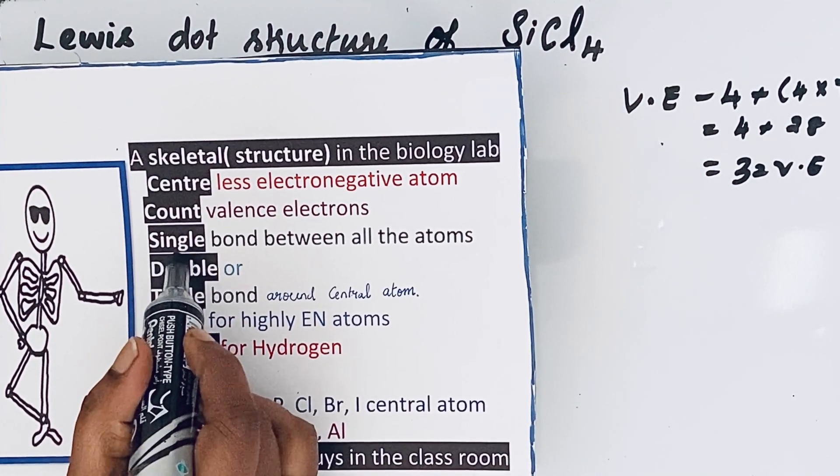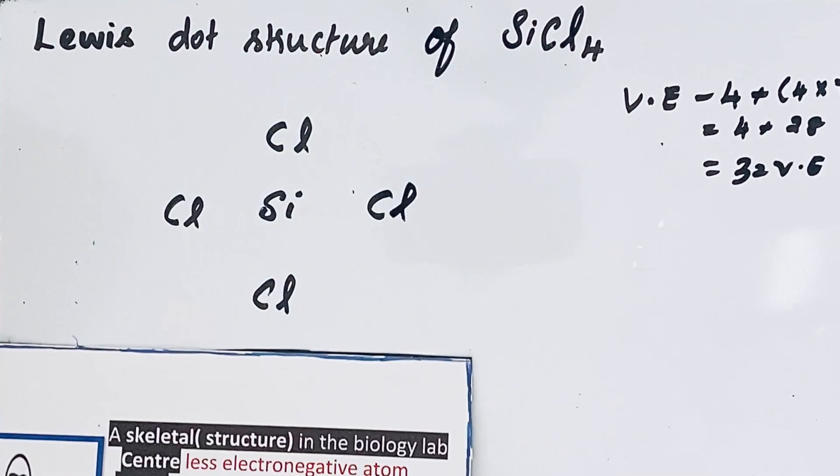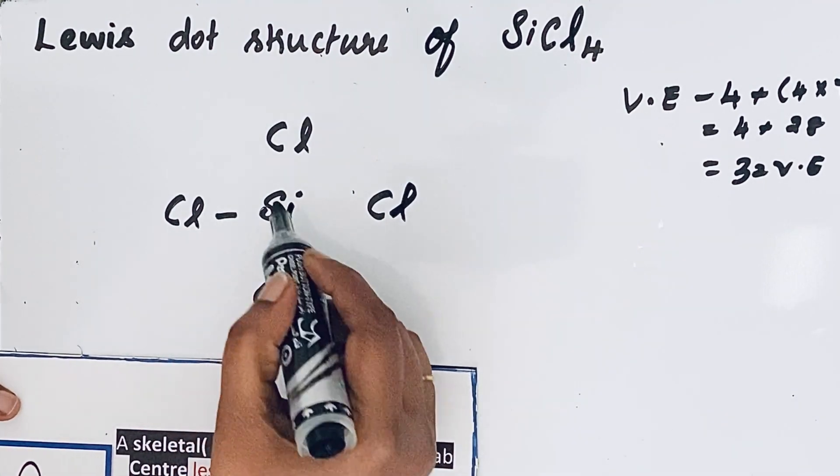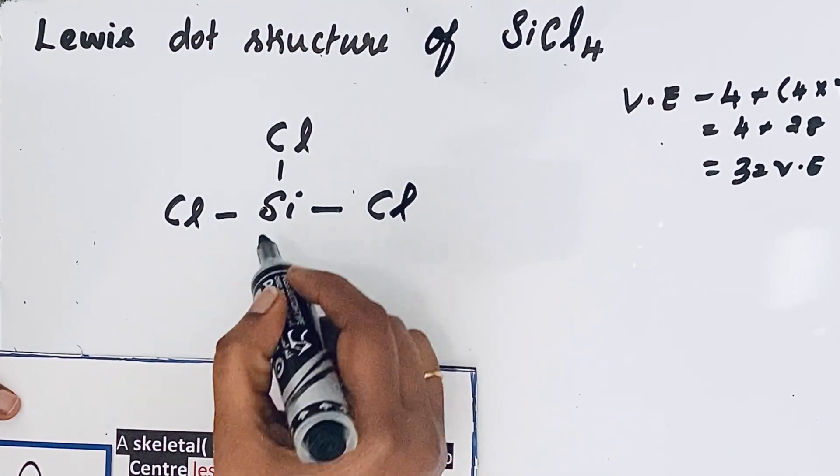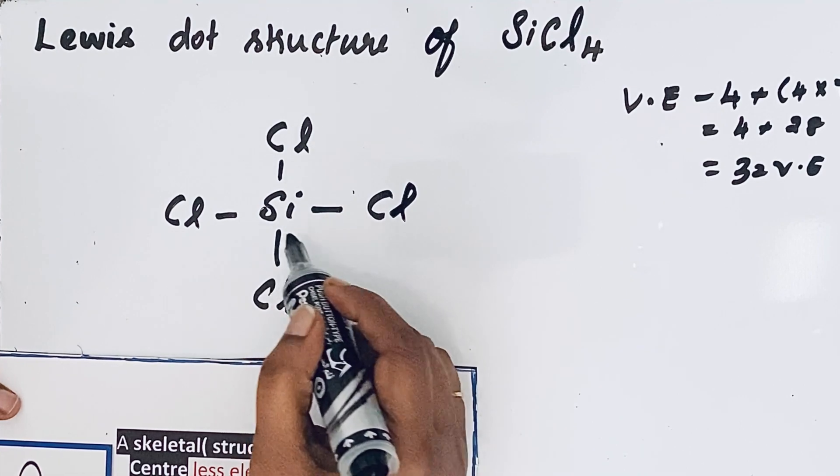See the next step: single bond between all the atoms. We draw the single bond between all the atoms. Single bond means two electrons are involved.